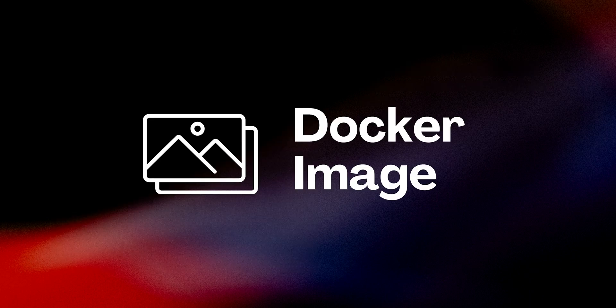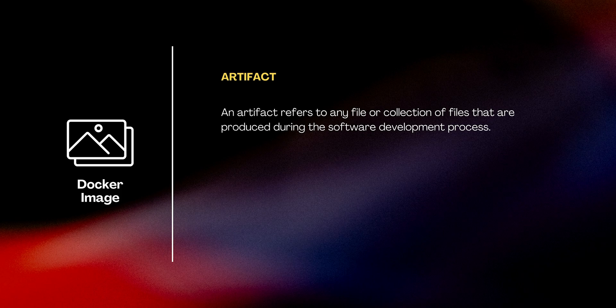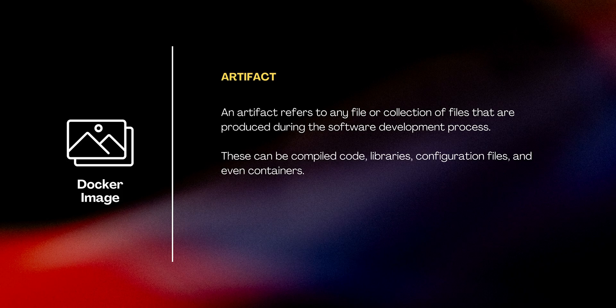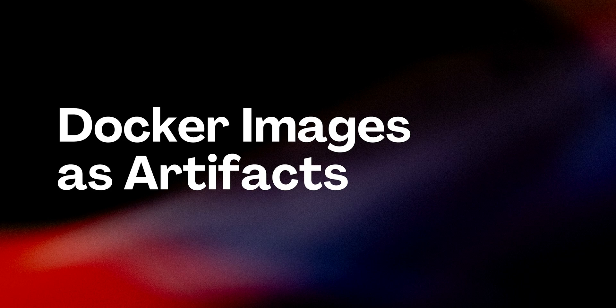Now let's move on to the second key component in the Docker ecosystem: the Docker image. Often when discussing Docker we highlight its ability to package an application with its environment into something called an artifact. In software development, an artifact refers to any file or collection of files that are produced during the software development process. These can be compiled code, libraries, configuration files, and even containers. Essentially, an artifact is a tangible outcome of your build process.